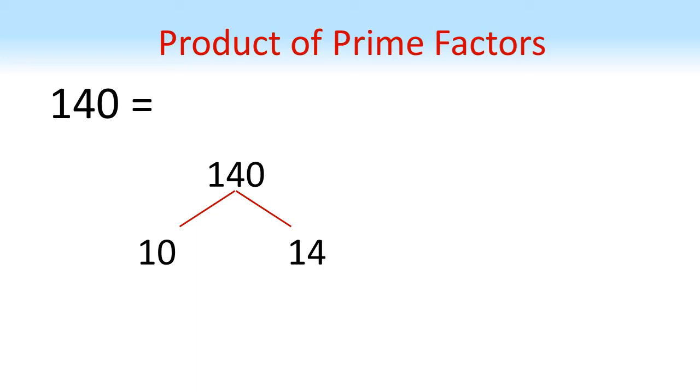Now neither of these are prime, so we're going to split them again. So 10 is equal to 2 times 5. These are both prime, so let's circle them.